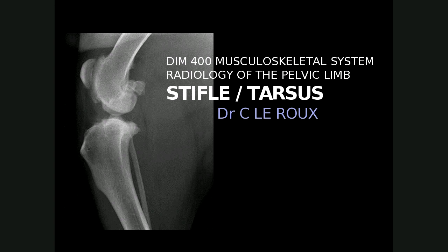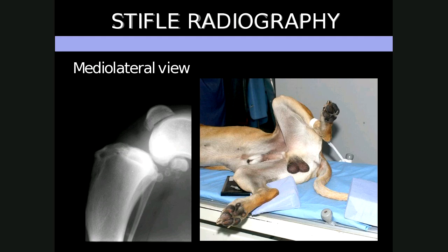There are two radiological views necessary to evaluate the stifle: the mediolateral and the craniocaudal view. For the mediolateral, the patient is positioned in lateral recumbency with the affected limb closest to the cassette. The unaffected limb is abducted and rotated about 45 degrees away from the area of interest, and the stifle is flexed to approximately 90 degrees. A foam pad can be placed under the hock to ensure a true lateral view is performed, by lifting the distal aspect of the tibia so that the entire tibia is parallel to the cassette. The primary beam should be centered on the stifle joint.